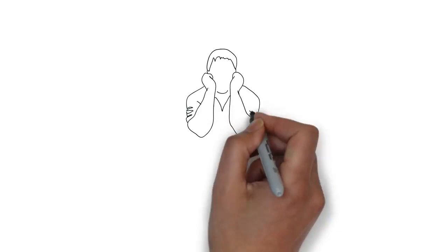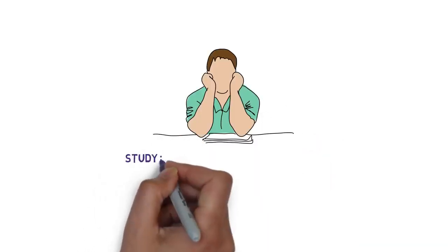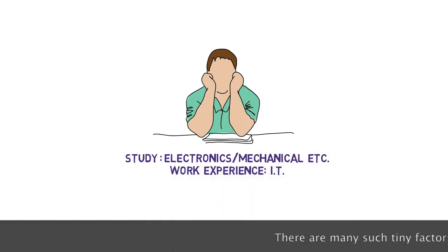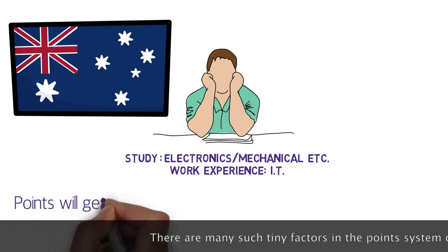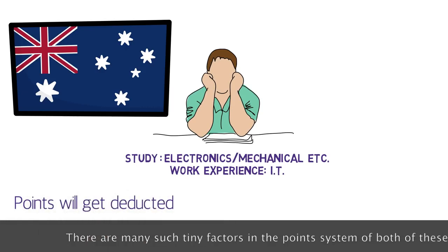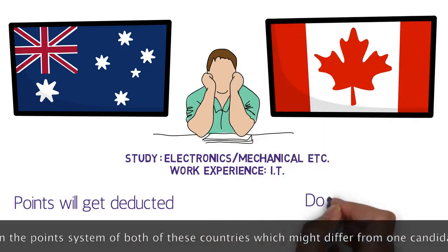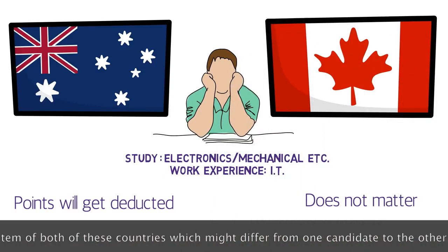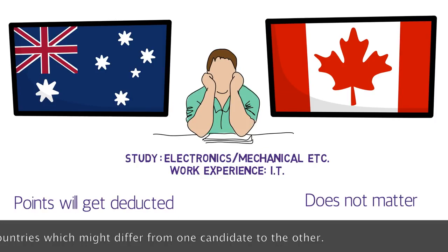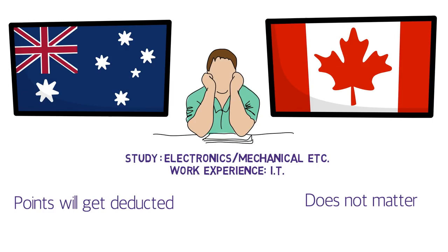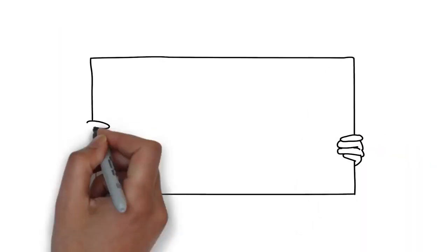Another important eligibility factor: if you studied in electronics, mechanical, biotechnology, or another stream but are working in IT, your points will be deducted in Australia. However, it does not matter in Canada, so Canada has an upper hand here. Since eligibility is application-specific and differs from person to person, first determine whether you are eligible for Canada, Australia, or both — then decide further.